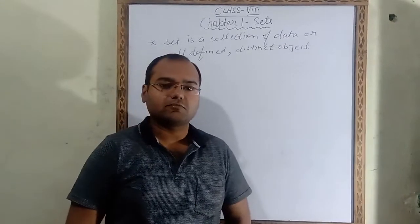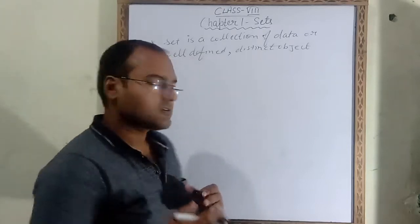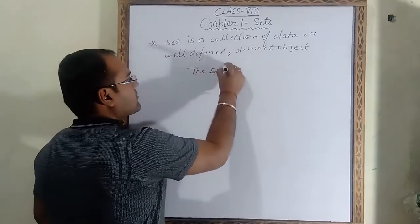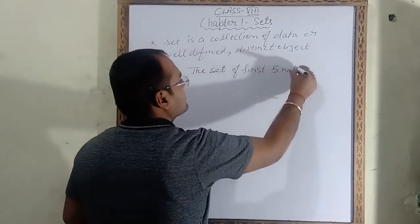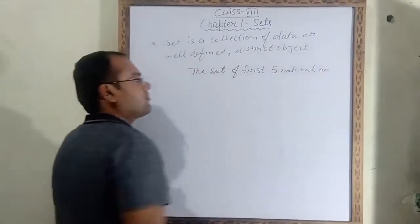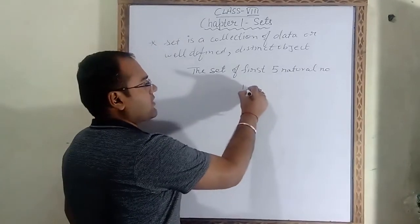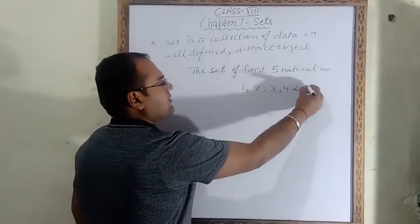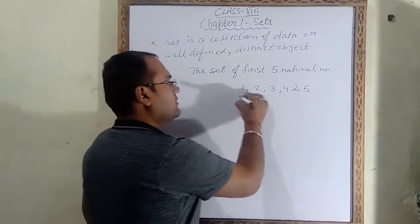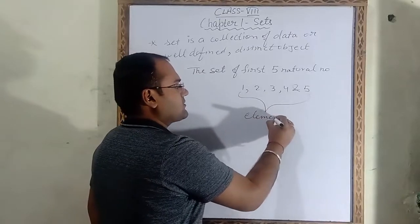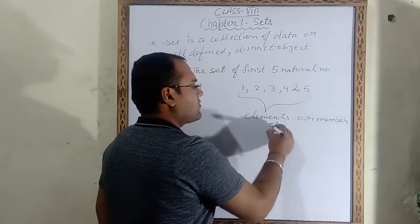Let's take one example. Suppose I said you have to write the set of first five natural numbers. What are the answers? You will say that the first five natural numbers are 1, 2, 3, 4, and 5. So these all numbers are called the elements or members of a set.